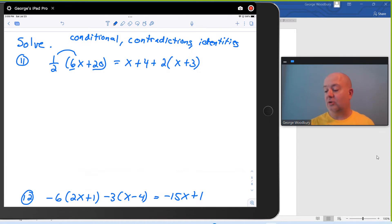It's going to happen anyway. So I'm going to begin by distributing 1 half times 6x, 1 half times 6 is 3. So that's 3x plus 1 half times 20, that's 10, equals the x plus 4 I just copied down because they're not part of any distributive multiplication. But I do have to distribute the 2 into that second set of parentheses. So 2 times x is 2x plus 2 times 3 is 6.